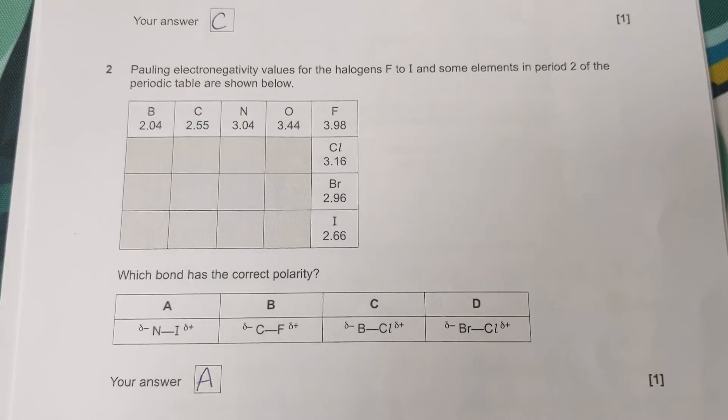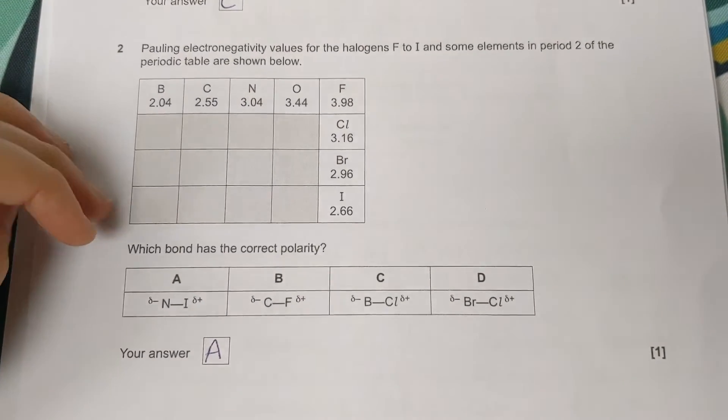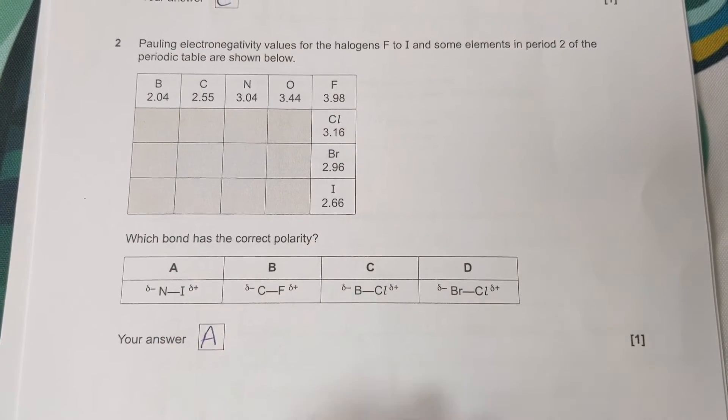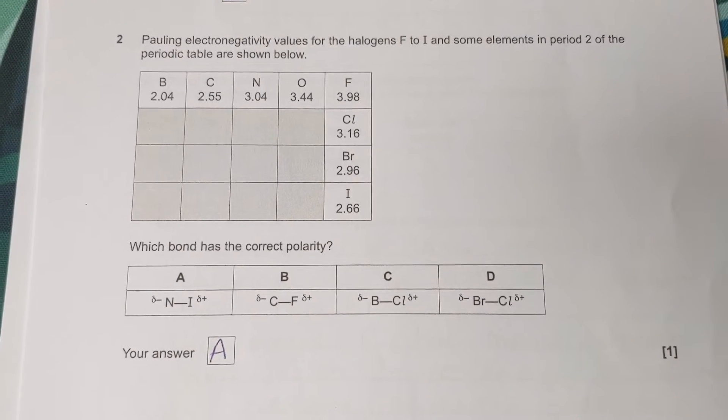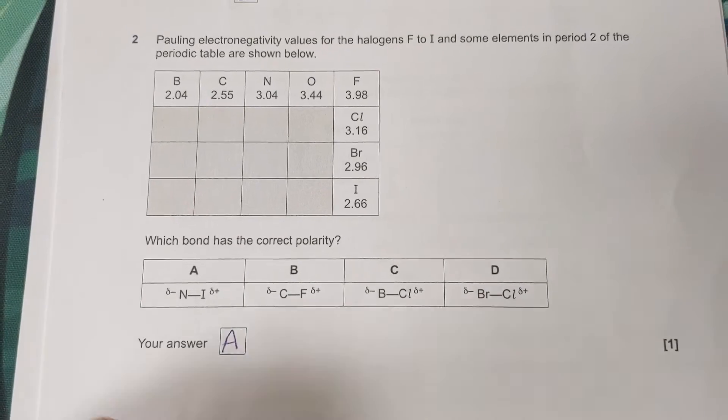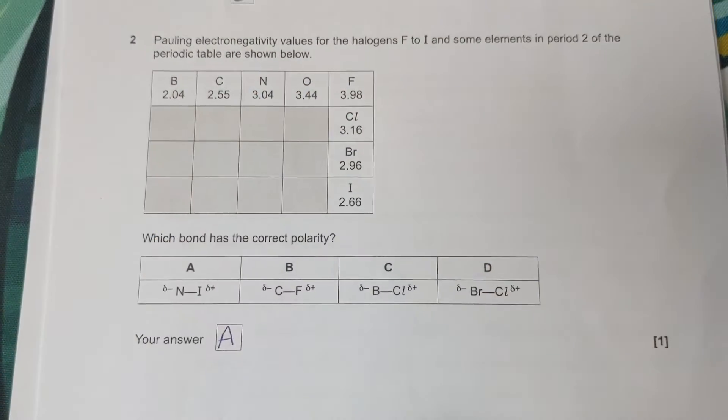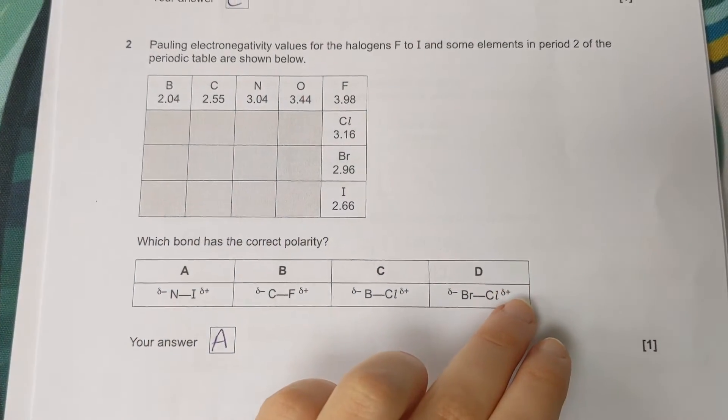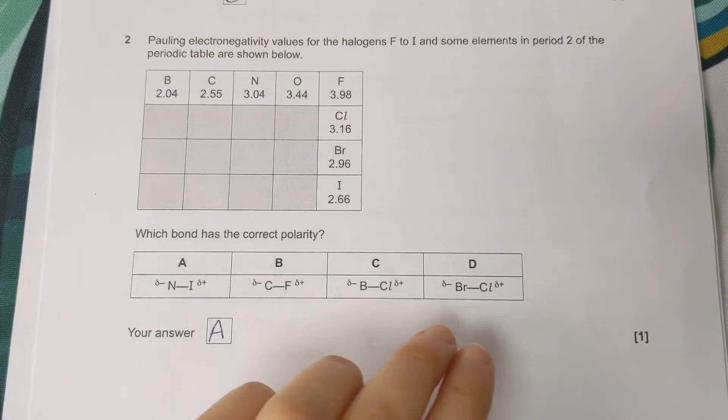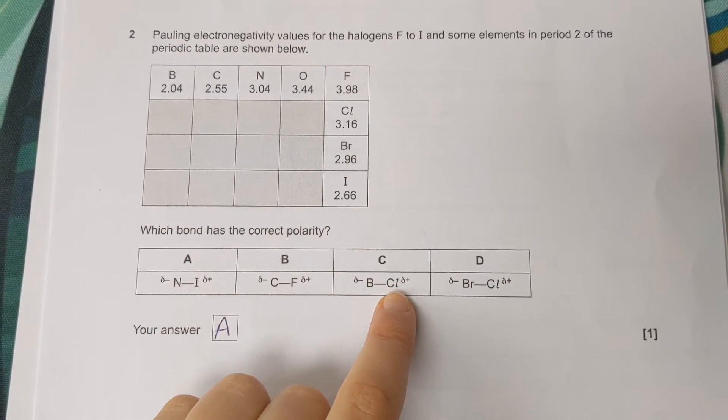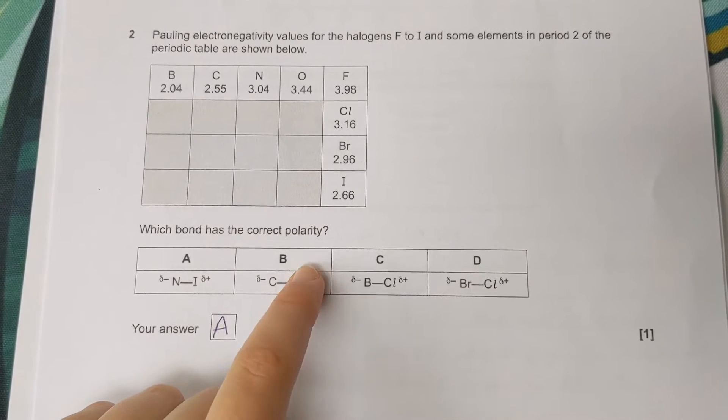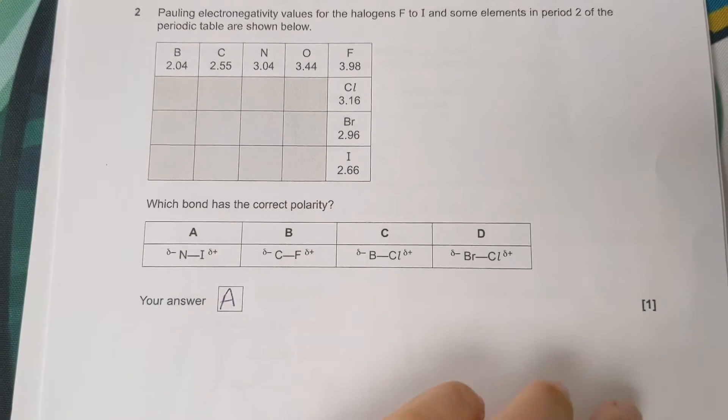Next question is about electronegativity. It's asking which bond has the correct polarity. So it's asking which of these has delta plus and delta minus in the right place. Now the element that takes the delta minus, the partial negative charge, should be the one with the highest electronegativity. So here chlorine has got a higher electronegativity than bromine. These are the wrong way around. Same here, chlorine should be delta minus. Fluorine is the most electronegative element, so it should be delta minus. This is the only one that's correct.